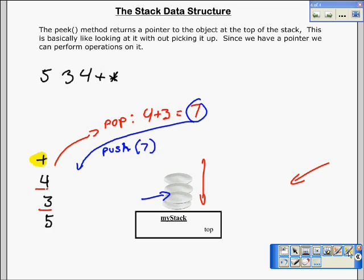And then what it would do is it would push the answer, the result, back onto my stack. So I would still have my five. It would push the seven on it.